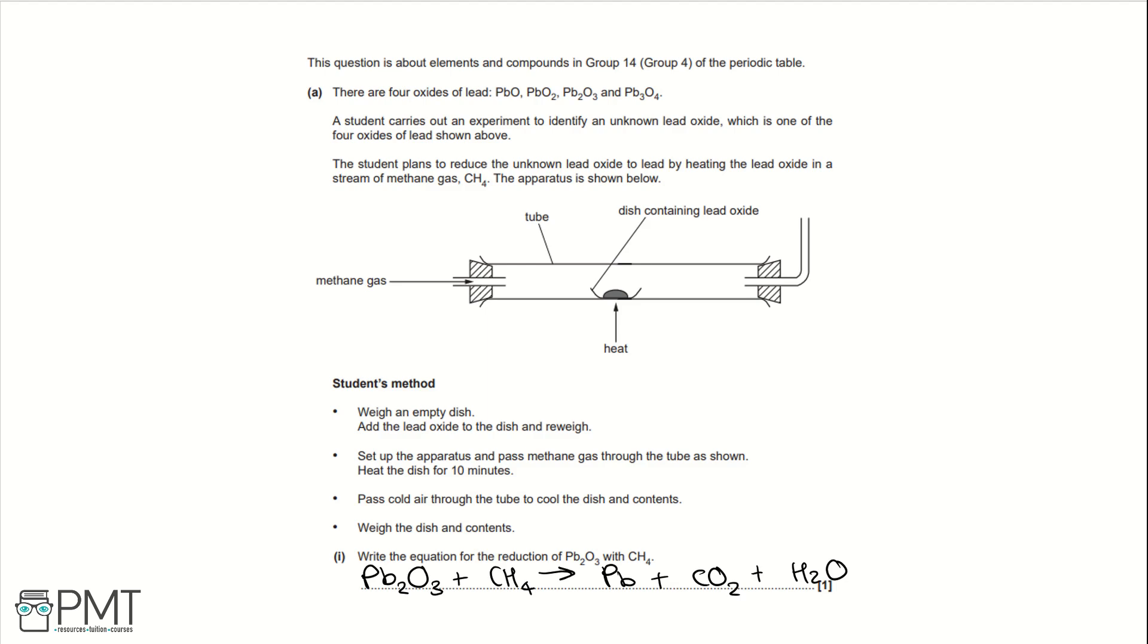So we're going to need six waters because we need three methanes. Because we've got three methanes, we need three carbon dioxides. And so we need eight leads because we've got four lead oxides. So we can check this using what's called a list method. So if we write Pb, O, C, and H for both sides of the equation, well we've got eight leads on both sides, we've got 12 oxygens on both sides, we've got three carbons on both sides, and we've got 12 hydrogens on both sides.